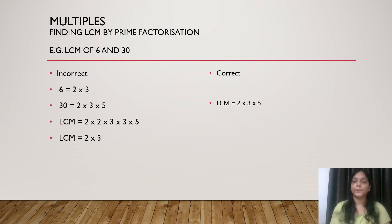The next topic is multiples. The most common mistake in multiples to find out the LCM. Let us take one example. We have to find the LCM of 6 and 30. First we need to factorize 6 which is 2 into 3. And the factors of 30 are 2 into 3 into 5.